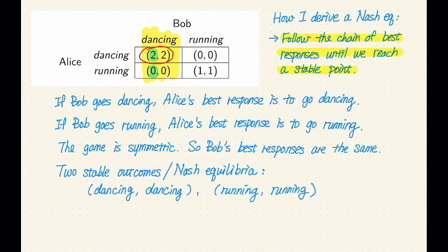By using a similar reasoning, you can also derive that running running is a Nash equilibrium as well. You can start from dancing running or you can start from running dancing and either way, if you choose the correct player, then you will end up with running running.